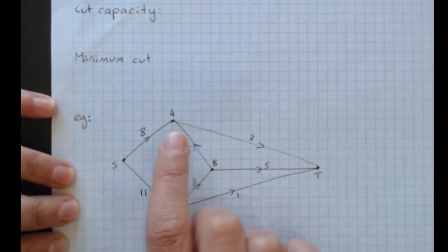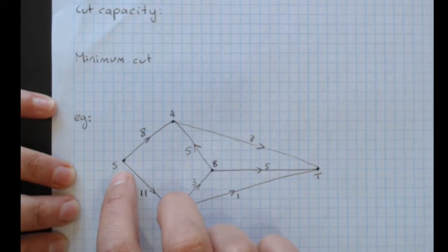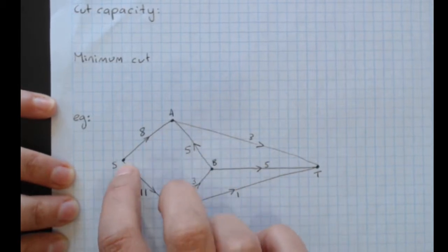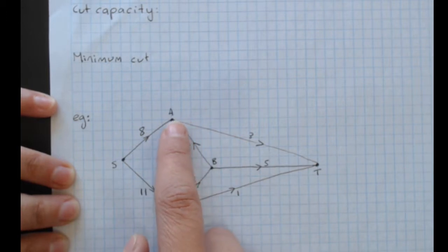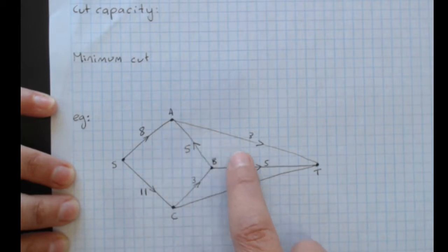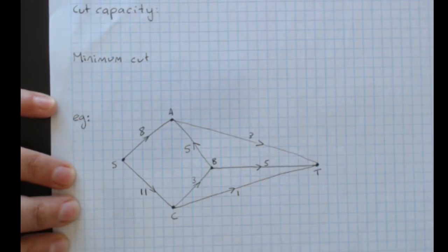If I've got eight liters or eight cars per hour or whatever, eight liters per minute going from source to A, but only three liters a minute can flow from A to T, then only three liters is going to get through per minute, even though eight's coming into the system. So the capacities of our weighted flow diagram graphs are important for working out the total amount of stuff that can be moved.